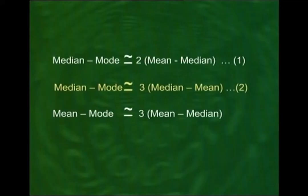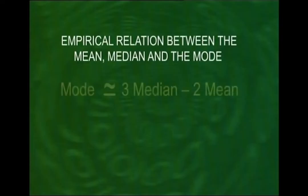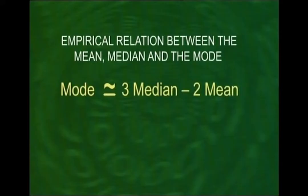If we solve that equation, we obtain the approximate empirical relationship as: mode ≈ 3 × median − 2 × mean. This was derived with reference to the moderately positively skewed distribution.